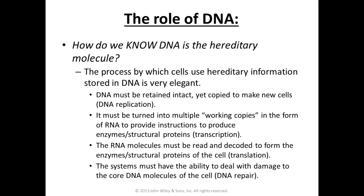We know today that hereditary information is stored in DNA. The DNA must remain intact and yet be copied to make new copies for new cells — we call this DNA replication. In your own understanding, what's the simplest way to explain replication? It's a copy of your genes. When the cell divides, it has to copy its DNA. DNA has two strands — it splits in half, and enzymes copy each strand into a new complementary strand using base pairing rules.